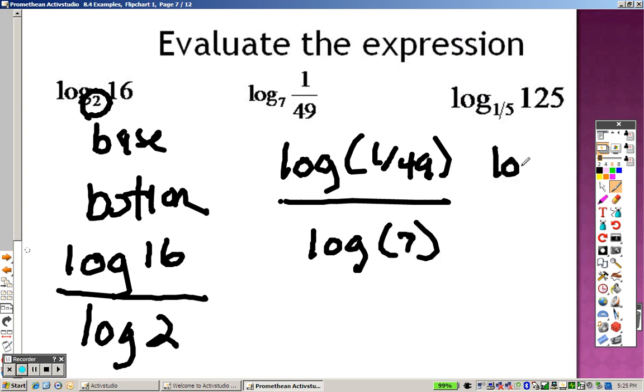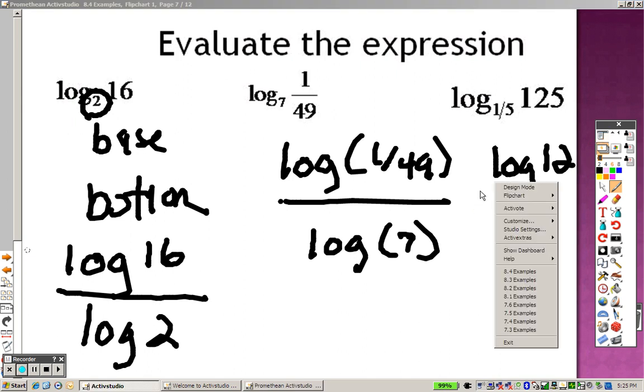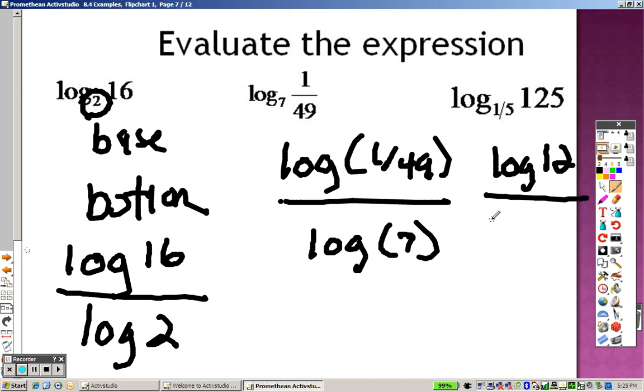This one you would type in as log of 1 49th over log 7. And this one you type in as log 125, log of 125 over log of 1 5th. So let's see what we get. Log is just right beside the 7 on your calculator. So log 16 divided by log 2, you get 4. So the answer to this problem is 4.